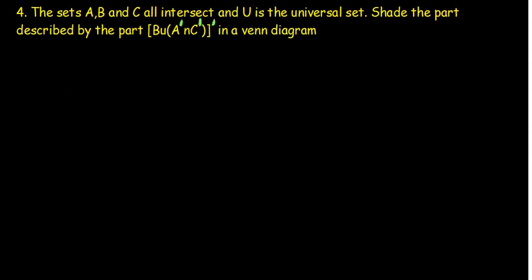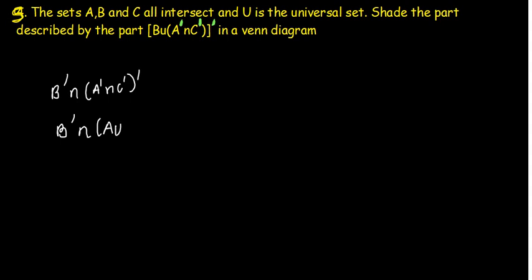For the last question: sets A, B, and C all intersect, and U is the universal set. Shade the part described by (B union (A complement intersection C complement)) complement. Distributing the outer complement: B complement, and the sign changes to intersection, then (A complement intersection C complement) complement. Distributing the inner complement: B complement intersection (A union C) — because A complement complement is A, the sign changes to union, and C complement complement is C. So we have B complement intersection (A union C).